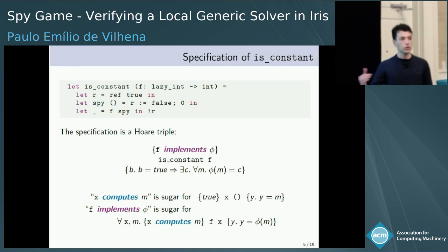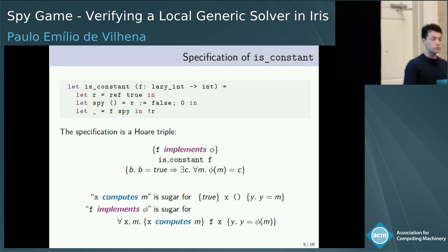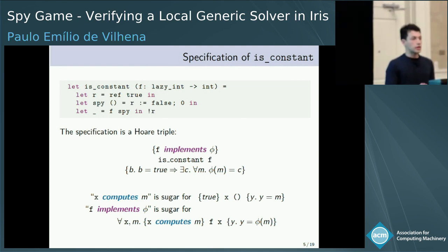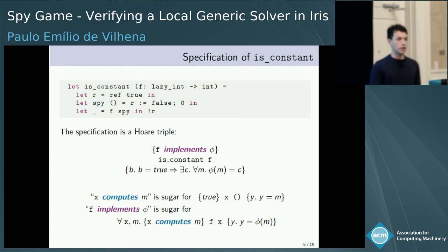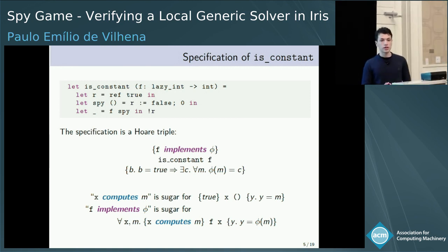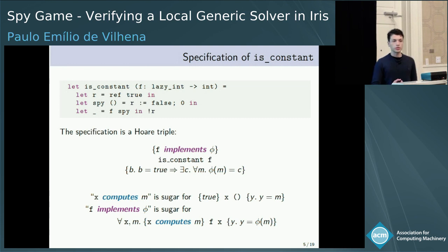The assertion 'f implements phi' captures the idea that the program f behaves as a mathematical function, and it is itself defined as a Hoare triple. The Hoare triple says that for any lazy integer x that computes an integer m, when f is applied to x, it returns phi of m. And the lazy integer computes an integer m if, when applied to unit, it returns m.